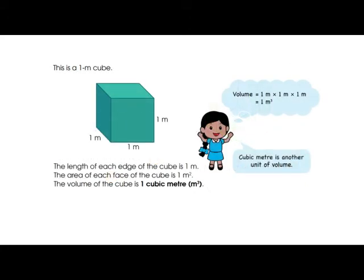Now we have a meter cube — they are just changing the unit. The previous one used centimeters; in this one we have meters. When we multiply three units of meter it gives you the cubic meter. The rest of the calculation is the same: the length of each edge of the cube is one meter, the area of each face is one square meter, so the volume of the cube is one cubic meter.